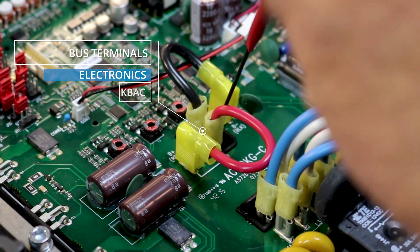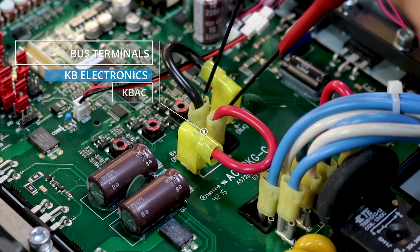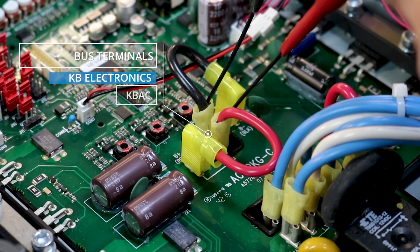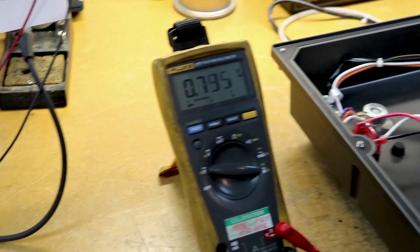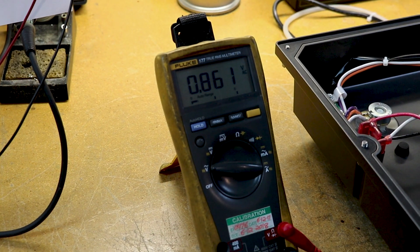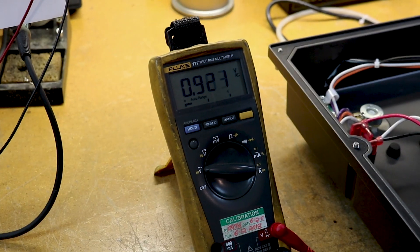With a light load on the drive, aim for under 20% of the rated output current. You should measure less than 1V AC RMS if your drive's bus capacitors are in good shape.